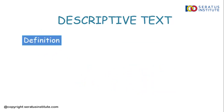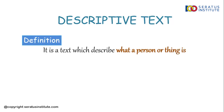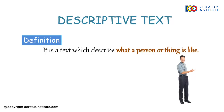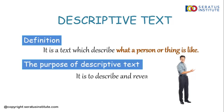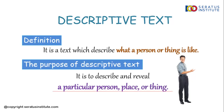This is the definition of descriptive text. It is a text which describes what a person or thing is like. Descriptive text adalah sebuah text yang menjelaskan tentang seseorang, benda, atau tempat. And what is the purpose of descriptive text? The purpose of descriptive text is to describe and reveal a particular person, place, or thing.